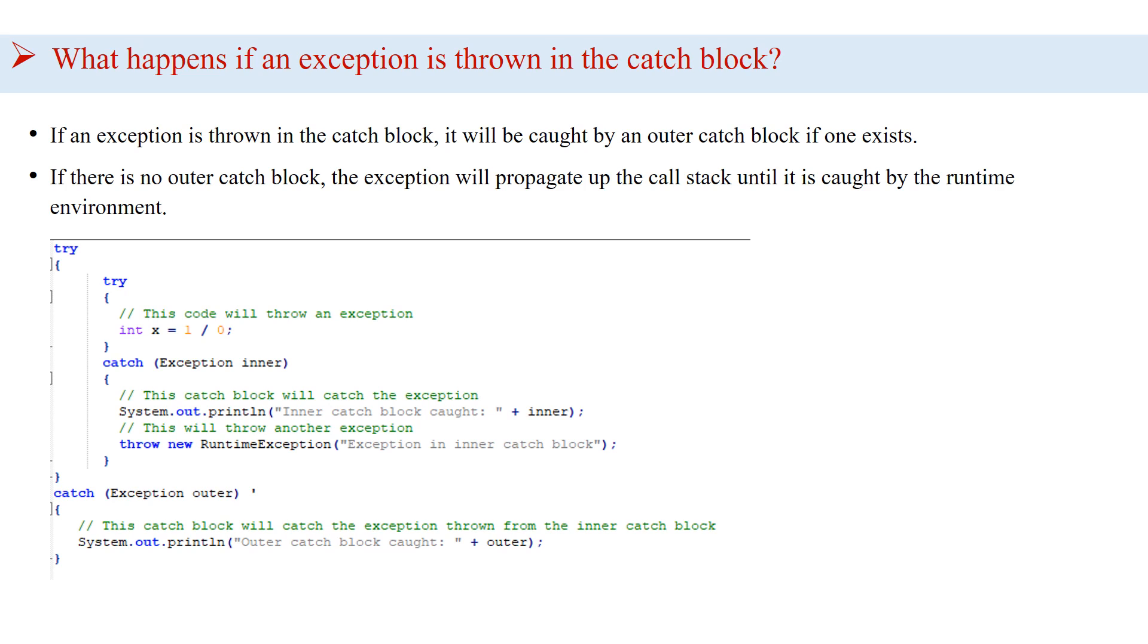The outer catch block then catches that new exception thrown from the inner catch block and prints out a message indicating that it caught the exception. If there were no outer catch block in this example, the new exception thrown from the inner catch block would propagate up the call stack until it reached the runtime environment.